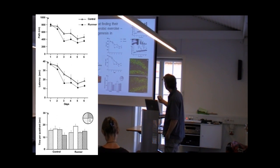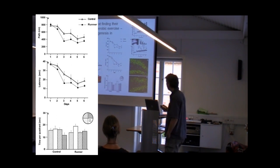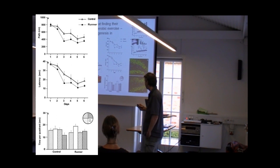So if you compare here the control group and then the running group, those that had done the aerobic exercise and had had this running wheel in their cage performed much, much better than the control group here in their ability of finding their way in a maze.